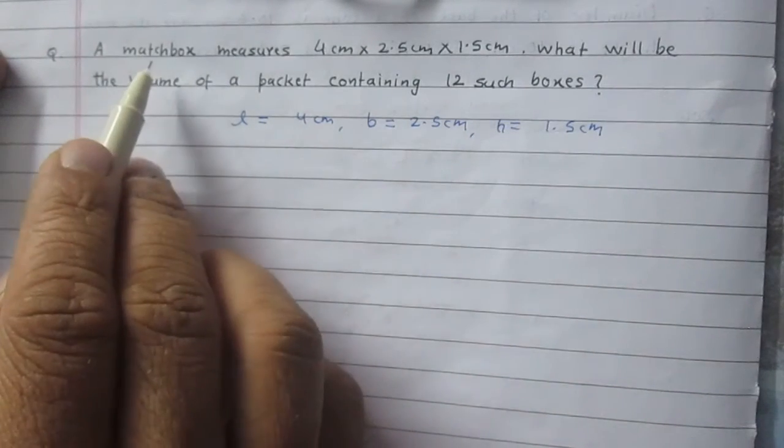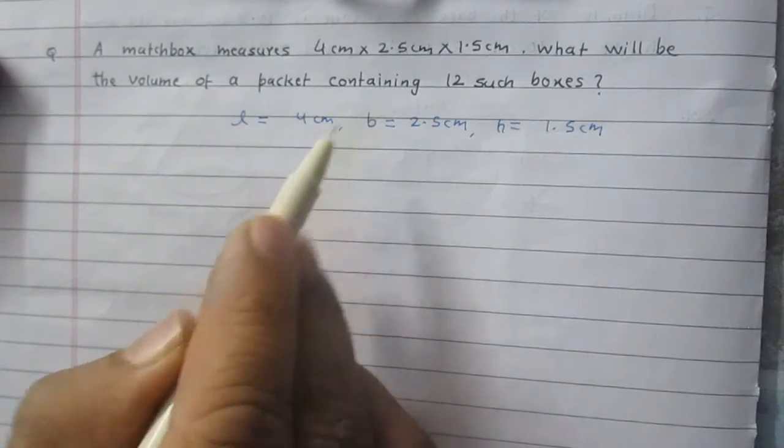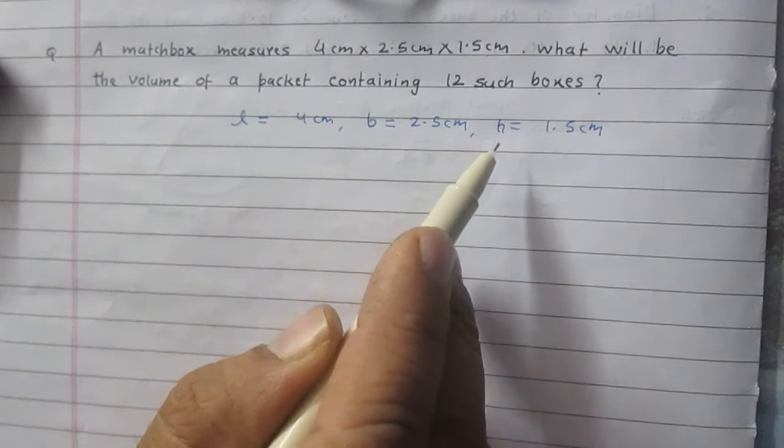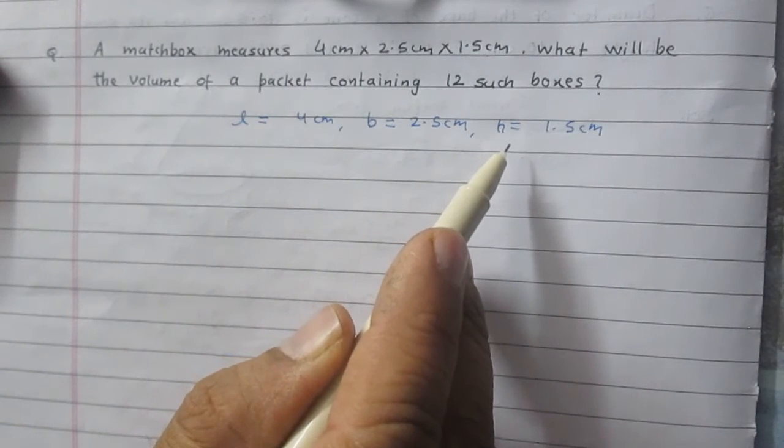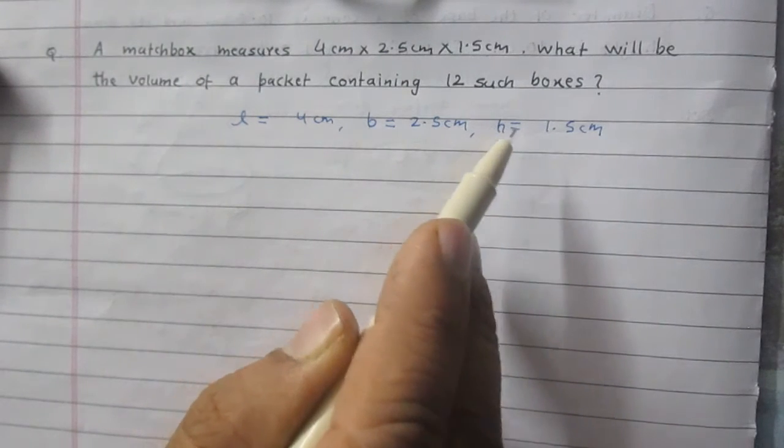This matchbox is in the shape of a cuboid because length, breadth and height all are unequal. Now we are to find the volume of such 12 boxes.